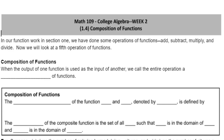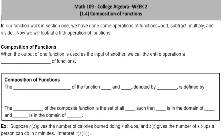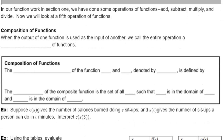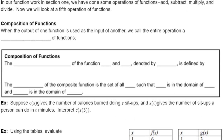Moving into section 1.4 of our chapter 1 of college algebra, we're going to be looking at the composition of functions. In a previous section, we had talked about adding, subtracting, multiplying, and dividing functions — those are operations of functions. We're going to add to that with a fifth operation, which we refer to as the composition of functions. When the output of one function is used as the input of another, we call that entire operation a composition of functions.